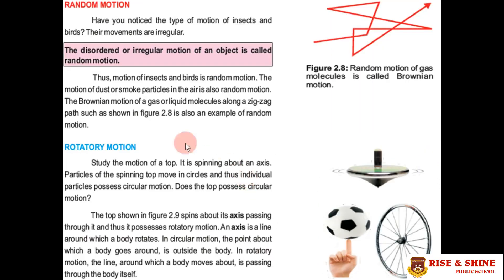The third type of translatory motion is random motion. The disordered or irregular motion of an object is called random motion. When an object moves irregularly without any specific pattern, we say it has random motion. Examples include gas molecules, air molecules, birds flying, insects moving, and smoke and dust particles — all of these randomly move and thus possess random motion.